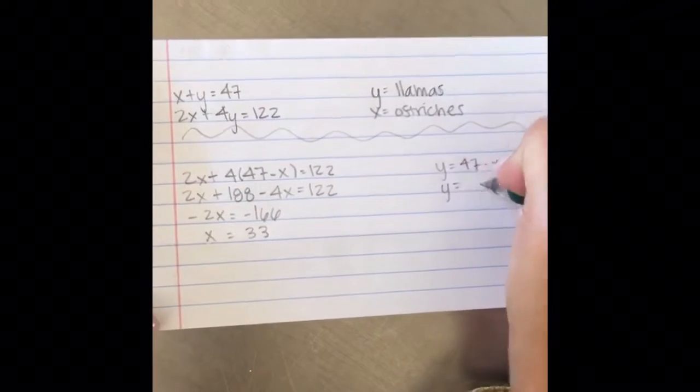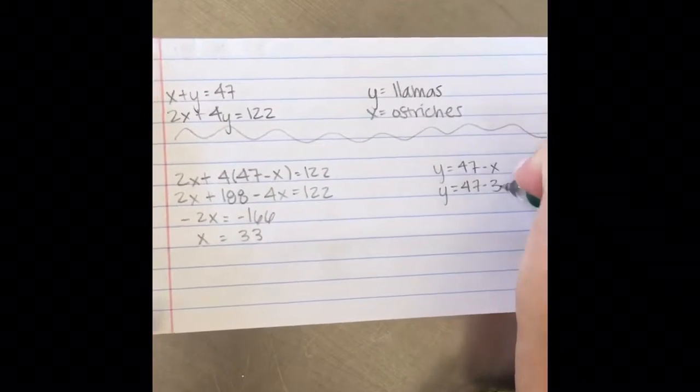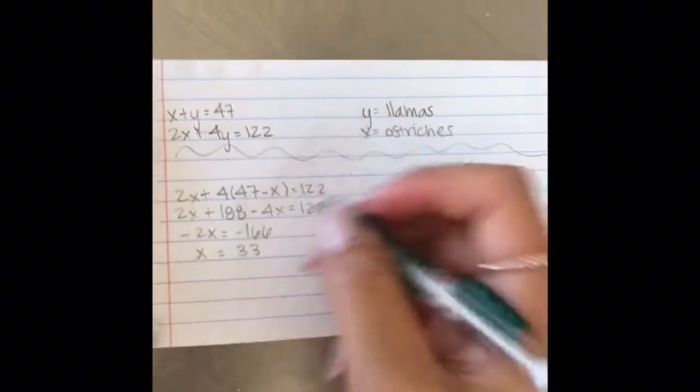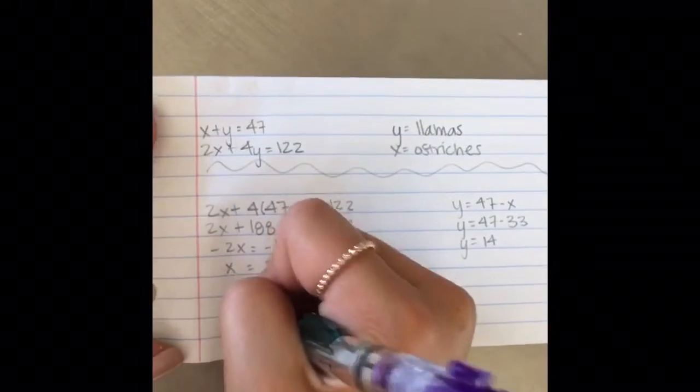Then, we did y equals 47 minus x. Then, we substituted 33 for x because that's what we got in the last equation. Then, y equals 14.